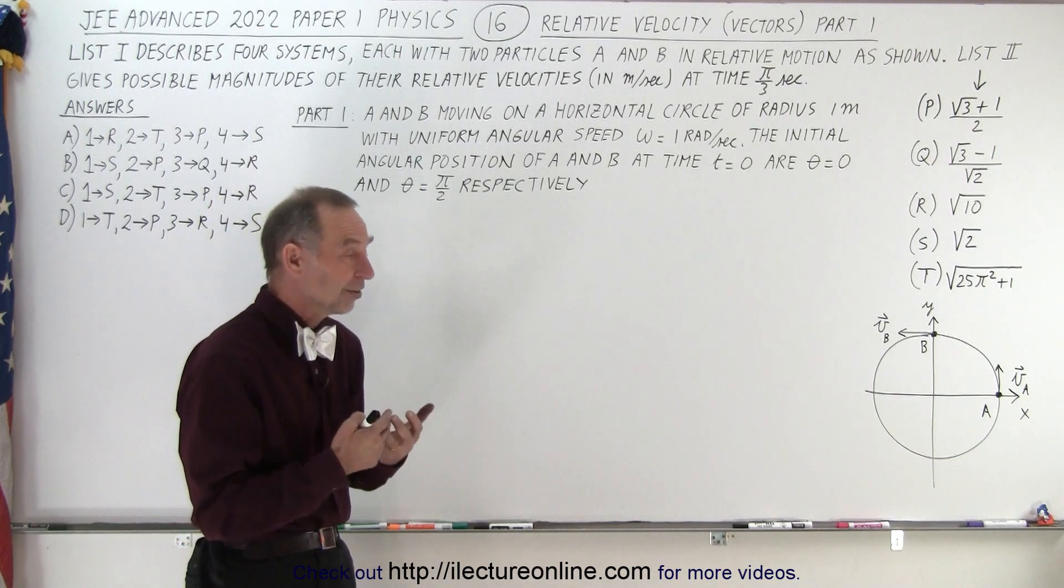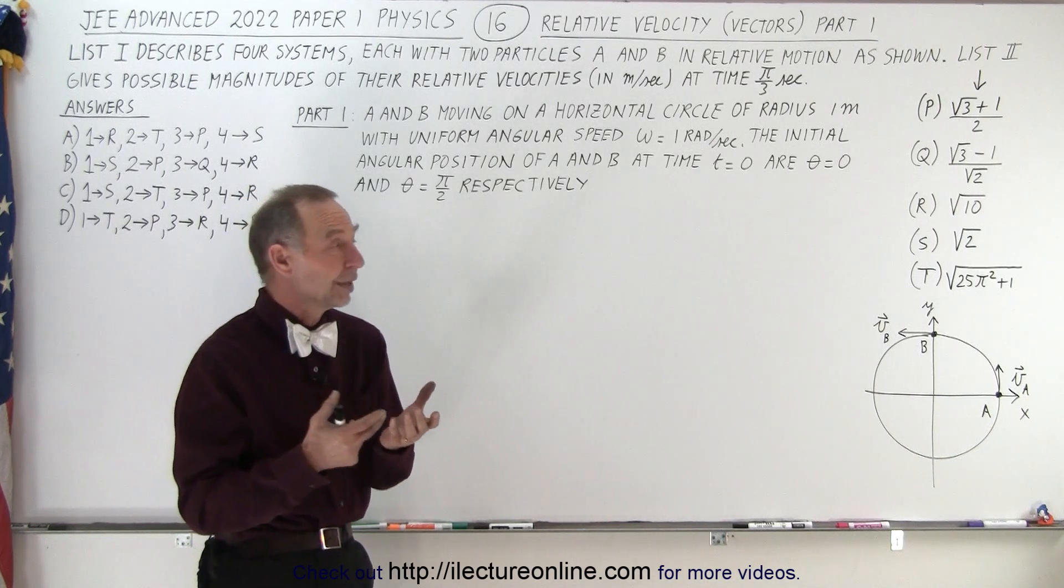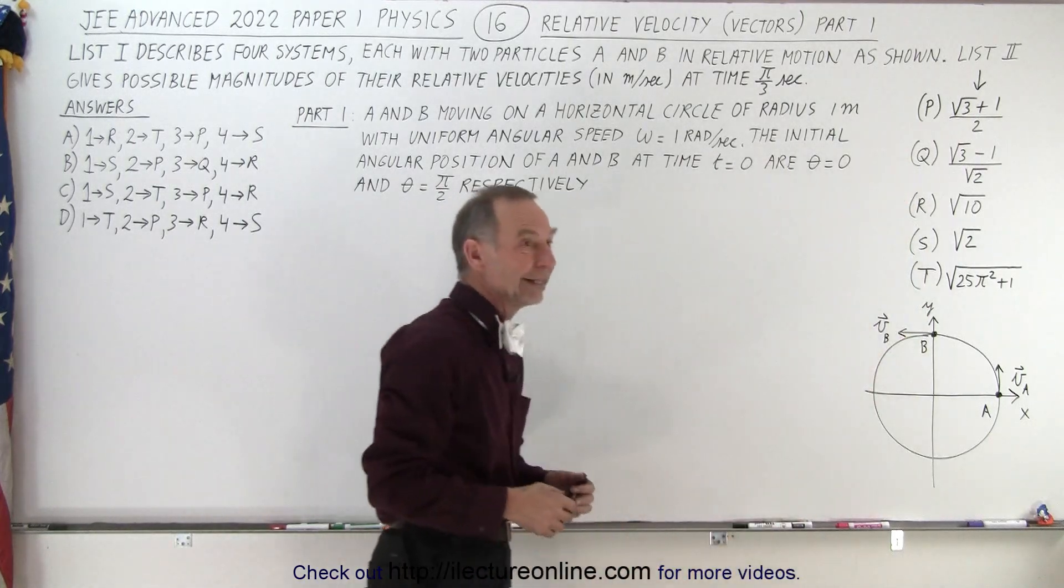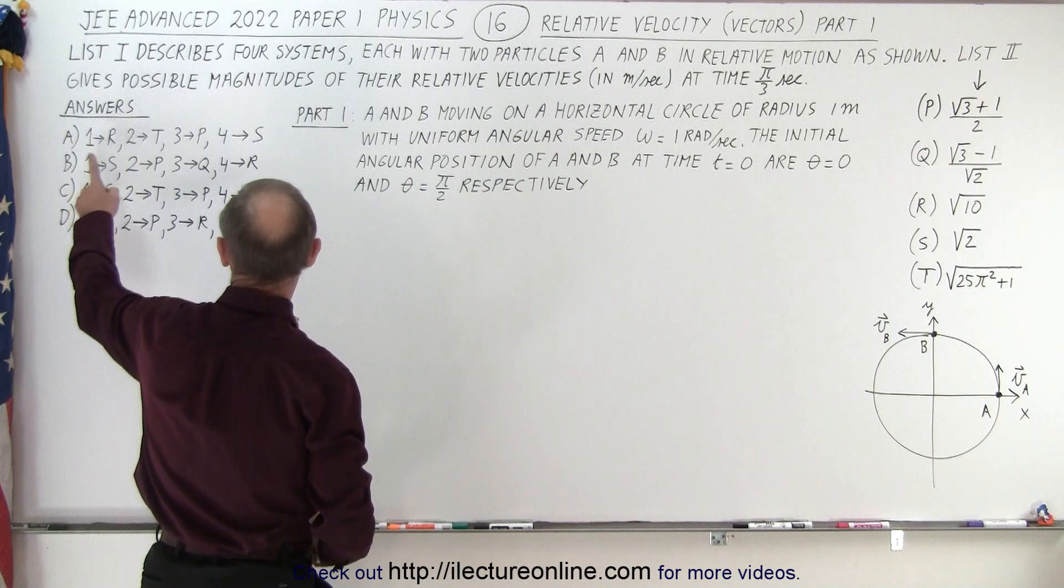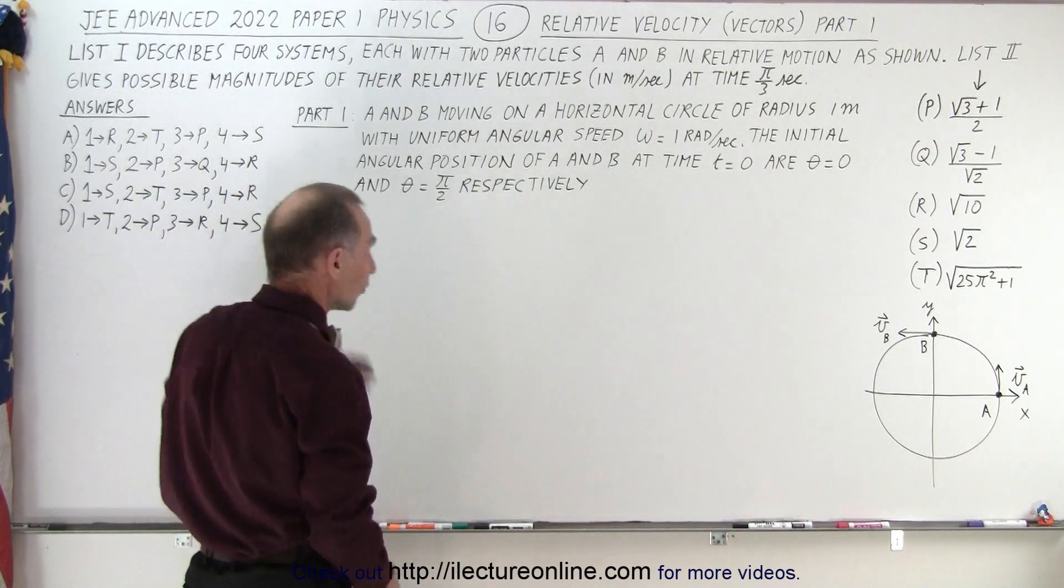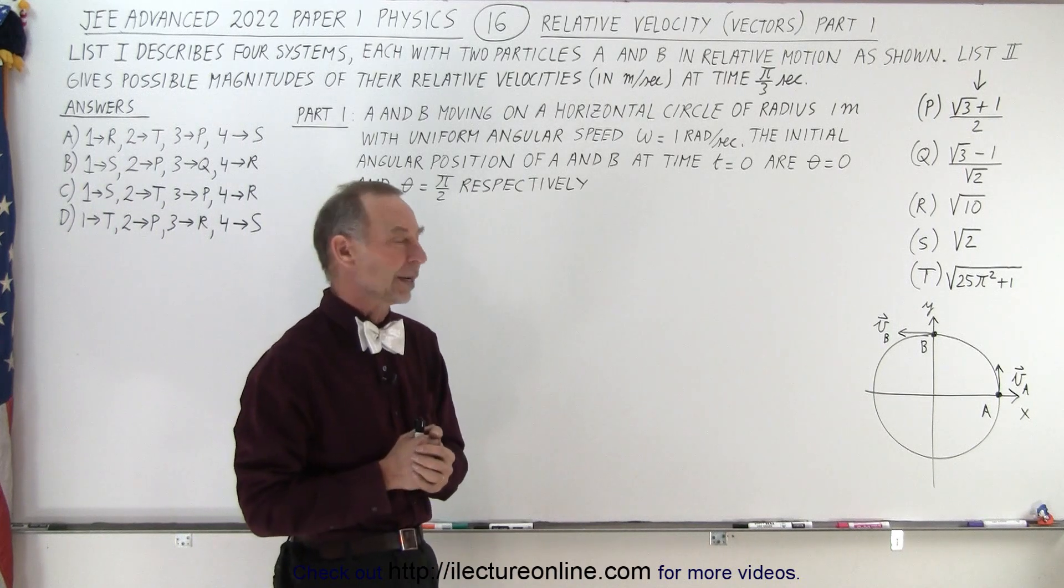This consists of four different systems that you have to solve, and then each of those four systems could have one of these possible answers. You need to determine which system has which answer: A, B, C, or D. There's four different combinations and only one of those combinations is going to be correct.